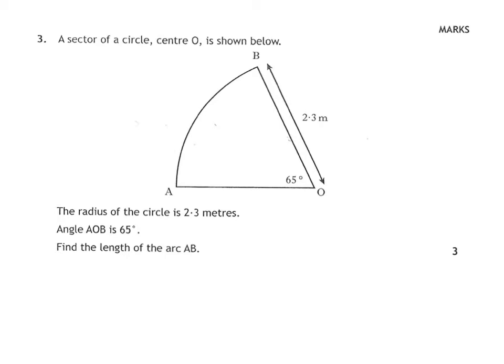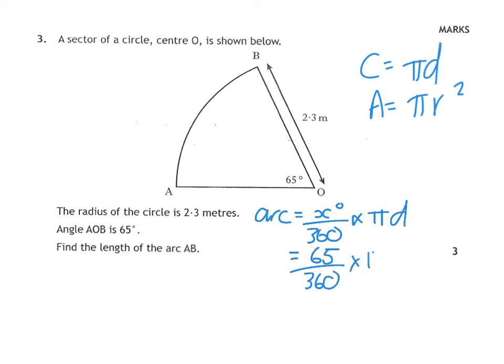Question 3, we have to find the length of the arc. Arc formula is your angle over 360 times pi. It's either pi d or pi r squared. Area you always write cm squared at the end, so that's your area one. Pi d is your circumference one, which is what we're after. You've got 65 over 360 times pi times diameter 4.6. Type that into your calculator and you'll get, to two decimal places, 2.61 meters.